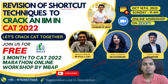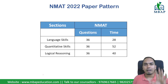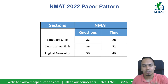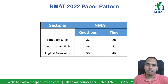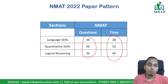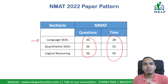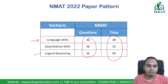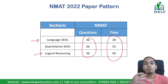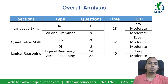Coming to the pattern: NMAT has not changed its overall paper pattern. The number of questions and the time per section remain the same — 36 questions per section. The overall structure has not changed this year, but what is changing is within the sections. Specifically, the language section has internal changes that are going to affect the cutoffs for this year.